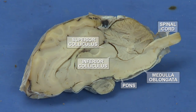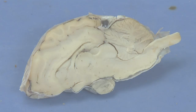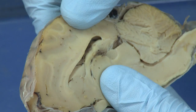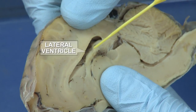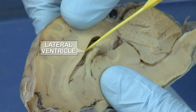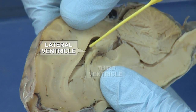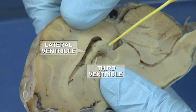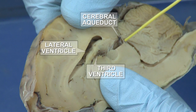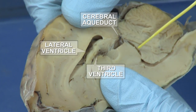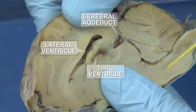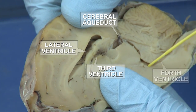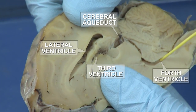Let's review the ventricular system in the sheep brain. This is the lateral ventricle, third ventricle, cerebral aqueduct, and finally the fourth ventricle.